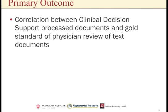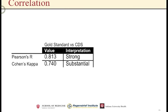Correlation between the clinical decision support process documents and the gold standard of physician review of the text documents was created as the primary outcome. The primary outcome was the correlation between the clinical decision support and natural language processing version versus the gold standard of manual review. Pearson's R was 0.813, which is interpreted as strong, and Cohen's Kappa was 0.74, which is considered substantial.